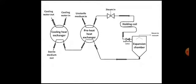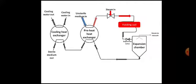Let us see how it works. Initially, unsterile medium enters the preheat exchanger for partial heating. The partially heated medium then enters the next chamber where steam is directly injected inside. This hot medium at the desirable sterilization temperature then reaches the holding section or holding coil. The length of this holding coil dictates the sterilization time-temperature relationship.